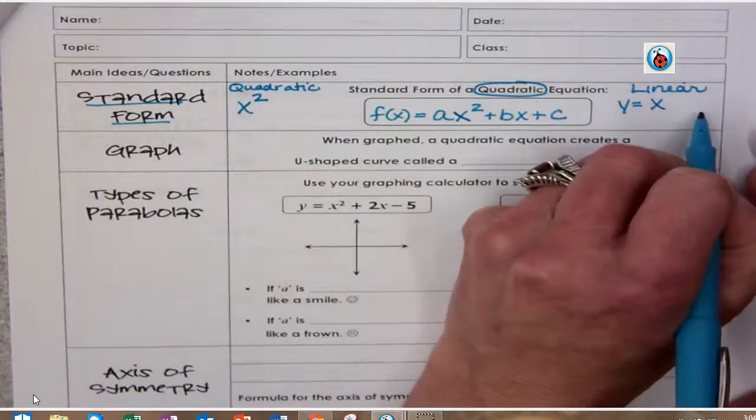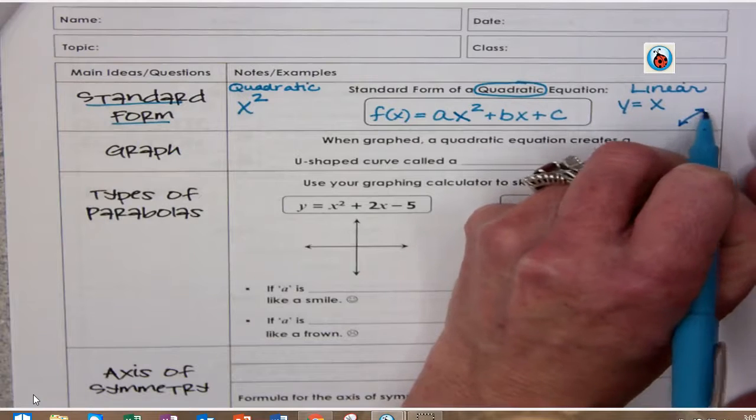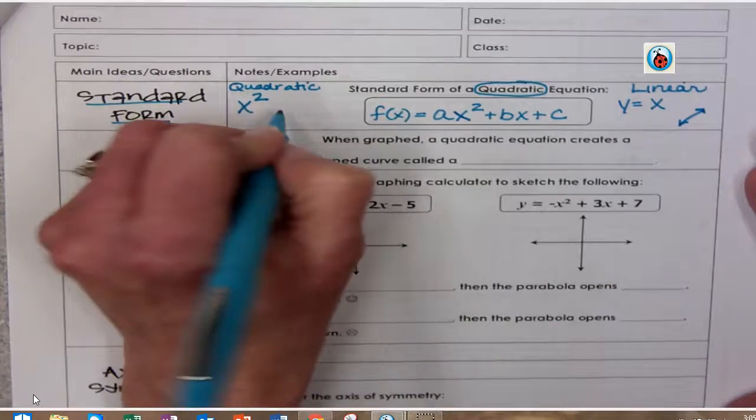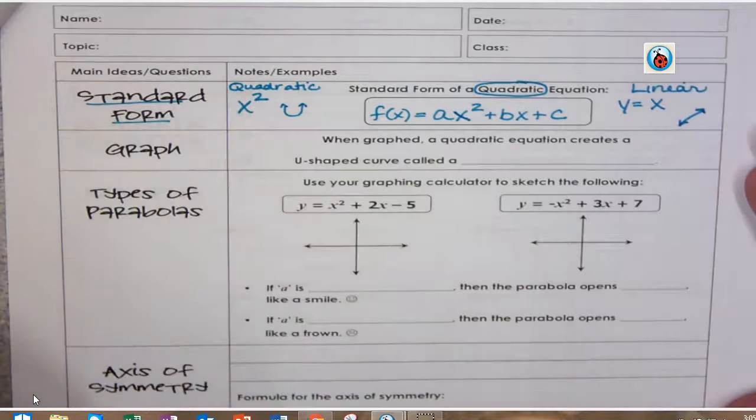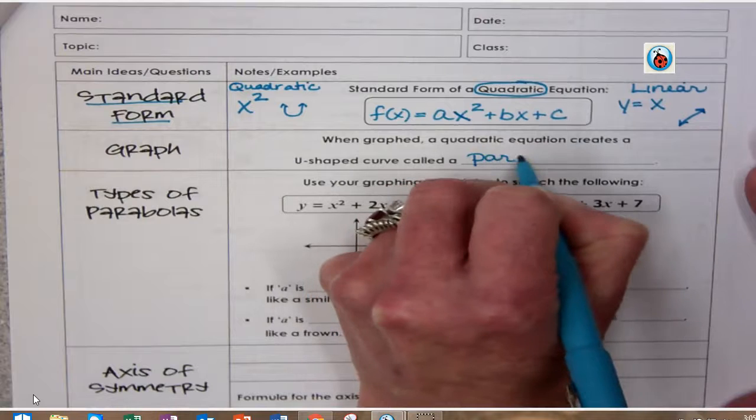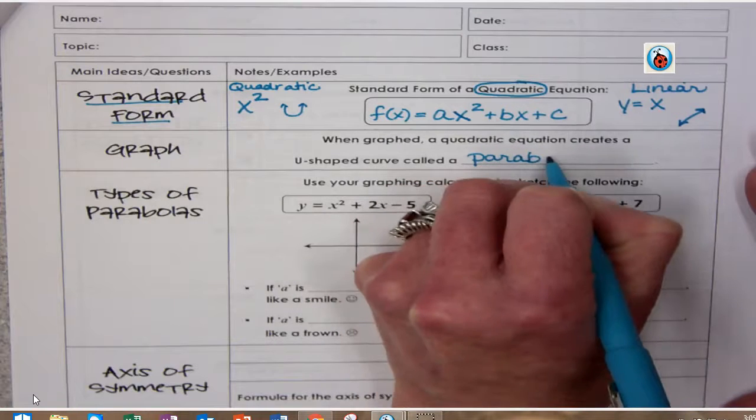And the difference is, this is on a graph, a linear is a straight line. A quadratic is going to form a u-shaped curve called a parabola. So when you graph it, it's going to be a u-shaped curve called a parabola.